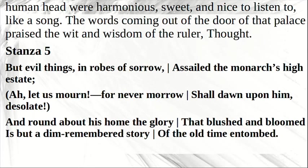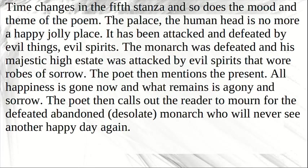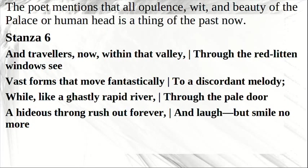Stanza 5. 'But evil things in robes of sorrow assailed the monarch's high estate. Ah, let us mourn, for never morrow shall dawn upon him desolate. And round about his home the glory that blushed and bloomed is but a dim-remembered story of the old time entombed.' Time changes in the fifth stanza, and so does the mood and theme of the poem. The palace — the human head — is no more a happy, jolly place. It has been attacked and defeated by evil spirits. The monarch was defeated and his majestic high estate was assailed by evil spirits that wore robes of sorrow. All happiness is gone and what remains is agony and sorrow. The poet calls on the reader to mourn for the defeated, desolate monarch who will never see another happy day again. All opulence, wit, and beauty of the palace or human head is a thing of the past.